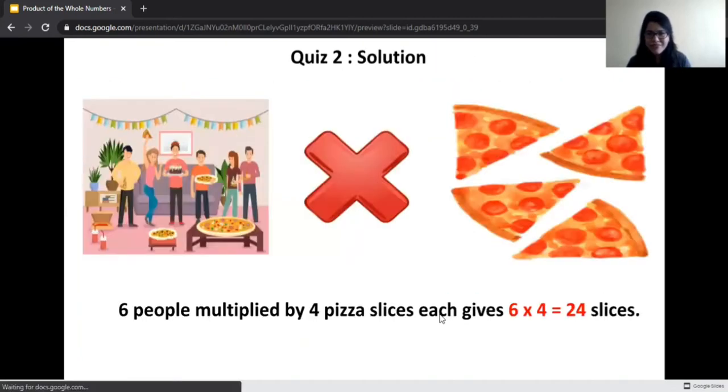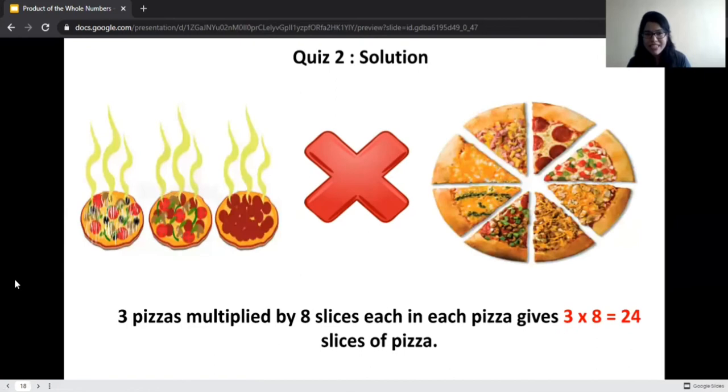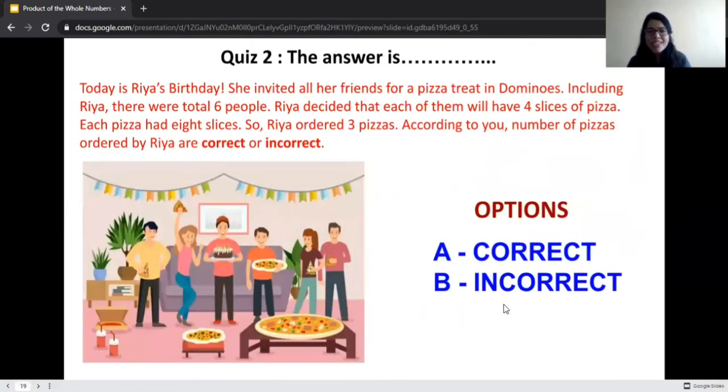Let's calculate. Here we have total six people and everyone is going to enjoy four slices of pizza. Six people multiplied by four slices of pizza gives us 24 slices. Is the number of pizzas ordered by Ria correct? Let's see. Each pizza had eight slices, correct? There are three pizzas total. Three pizzas multiplied by eight slices will have total 24 slices. The number of pizzas ordered by Ria is correct.